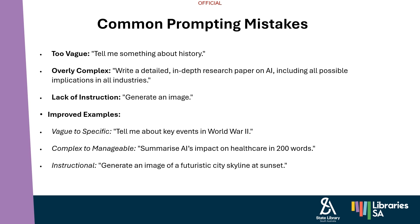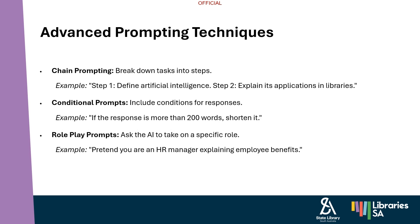Moving to advanced prompting techniques, we have three main ones: chain prompting — breaking tasks into steps; conditional prompts — including conditions for responses, for example if a response is more than 200 words then make it shorter or up to 500 words; and role play prompts — asking the AI to take on a specific role, such as 'Pretend you're an HR manager explaining employee benefits.' As you become more comfortable with prompting, try these advanced techniques to guide the AI more interactively.